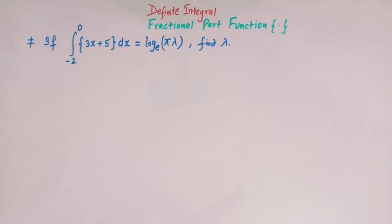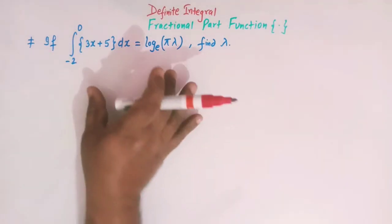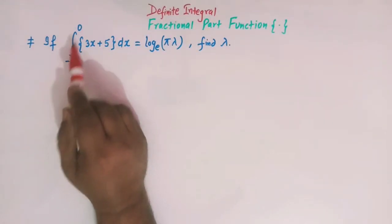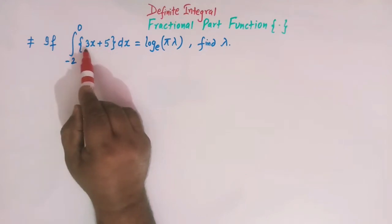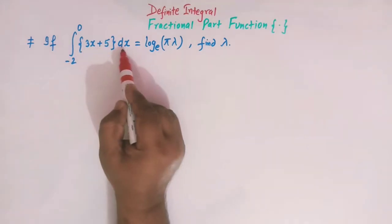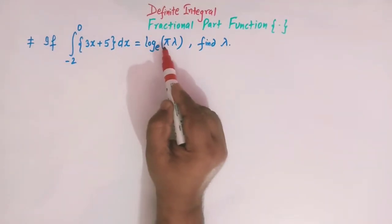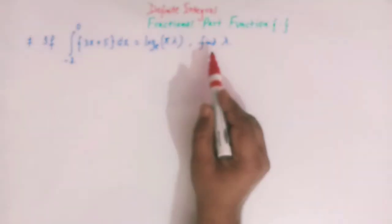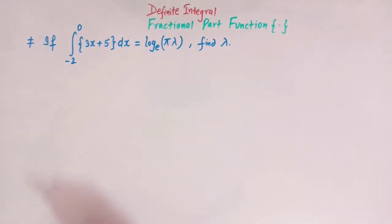Hello viewers. In today's class we are going to discuss yet another important and conceptual definite integral involving fractional part function. Here we are given the integral from minus 2 to 0 of the fractional part of 3x plus 5 dx, which is equal to log of pi·lambda to the base e. We have to find the value of lambda.